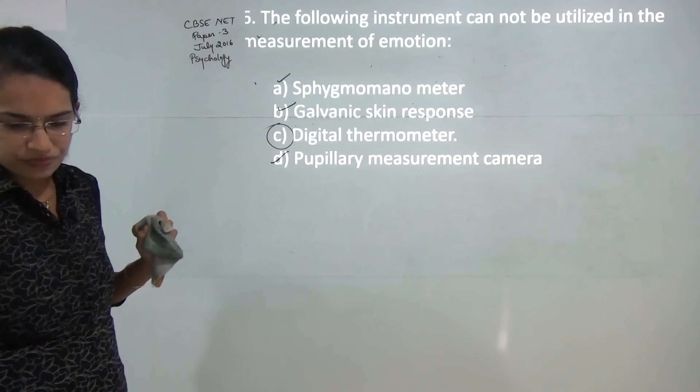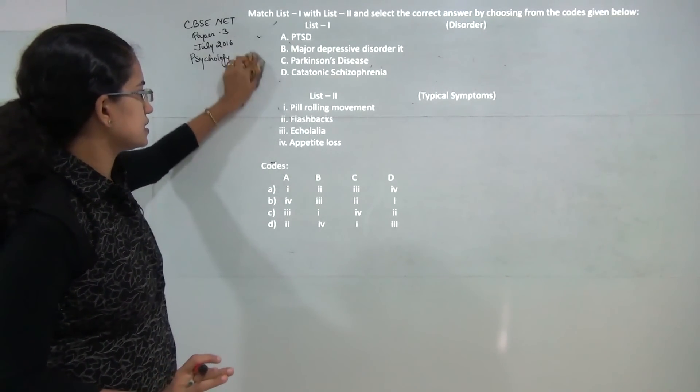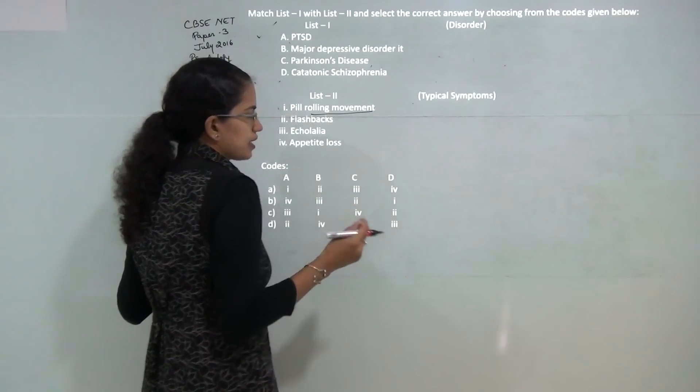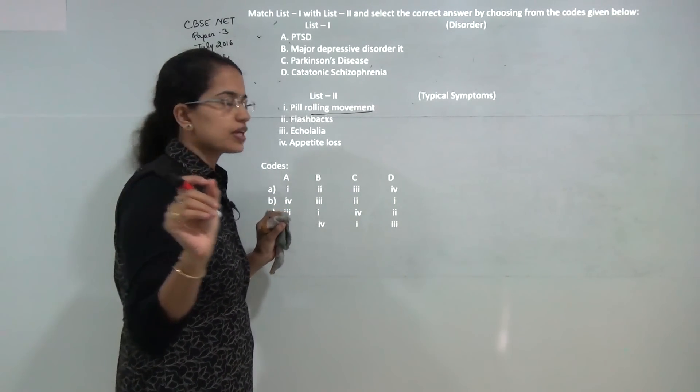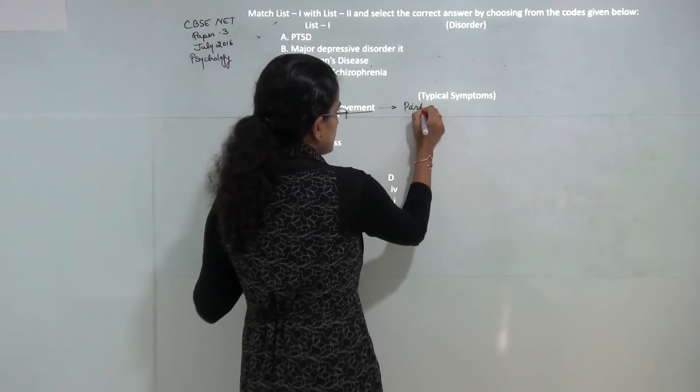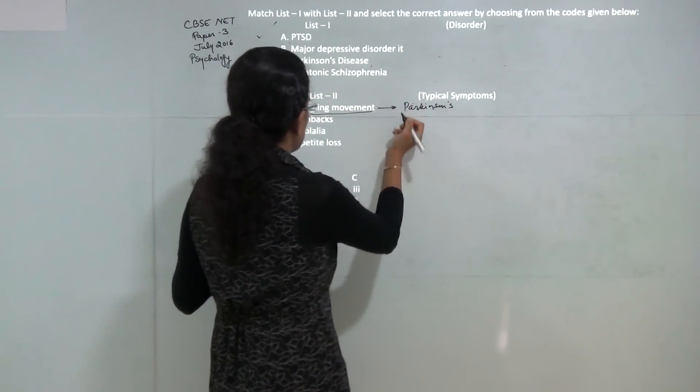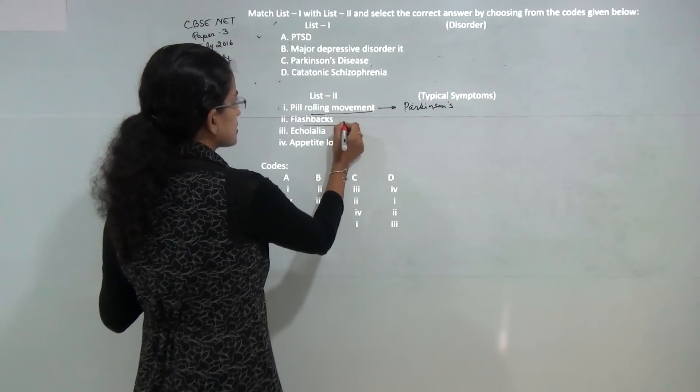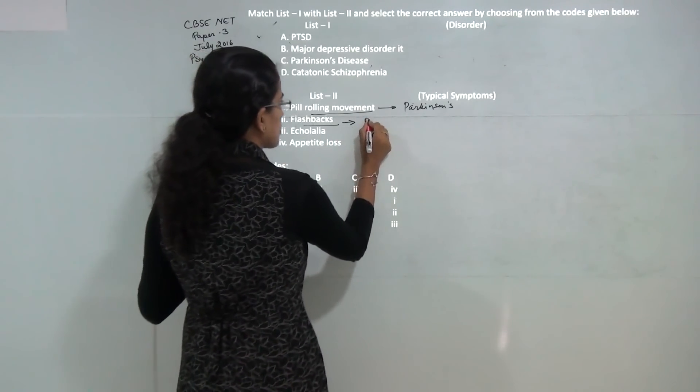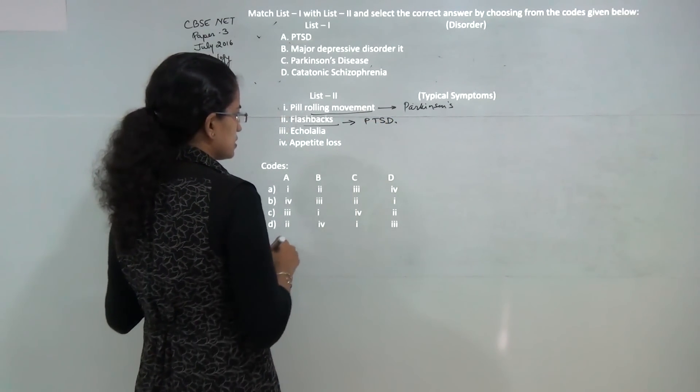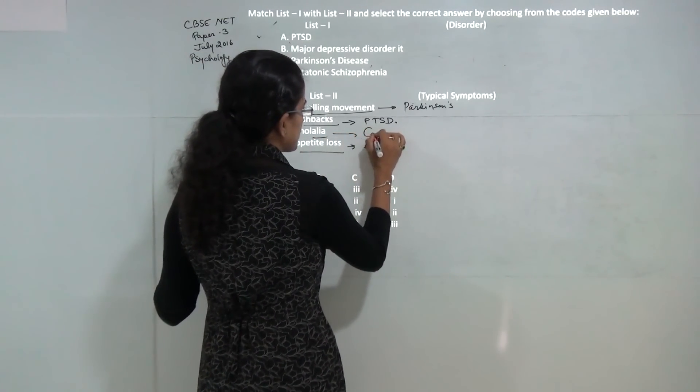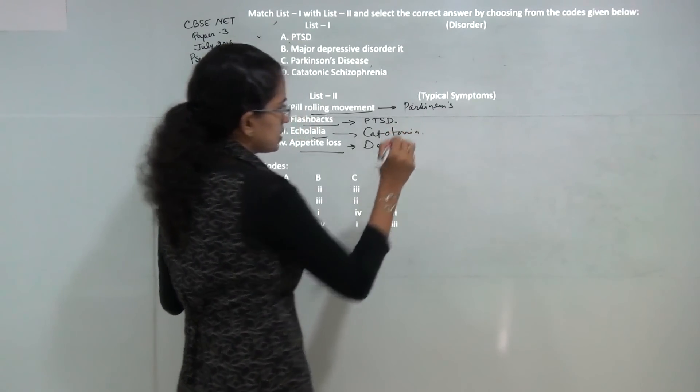Next question: you have various disorders and the associated symptoms. Pill rolling tremors are common in Parkinson's. Flashbacks or memories of the past that strike back are common in PTSD, post-traumatic stress disorders. Appetite loss is common in depressive disorders, and echopraxia is common in catatonia or catatonic schizophrenia. So these are the correct matches.